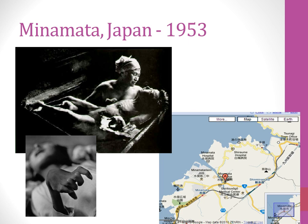Minamata is the site of mercury contamination from the Chisso pharmaceutical plant, which was releasing its runoff directly into a small bay — you can see the location on the map. The contamination got into the water, the fish became contaminated, and since fish was the primary source of protein for the people on the island, they too became contaminated and developed mercury poisoning.